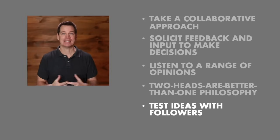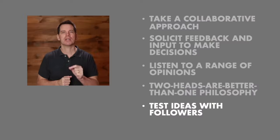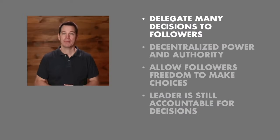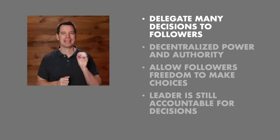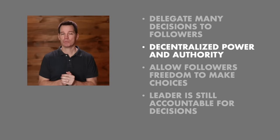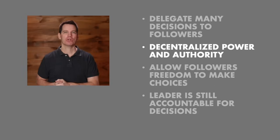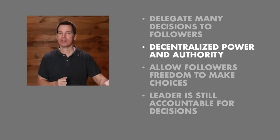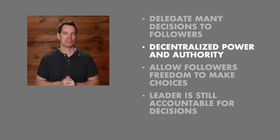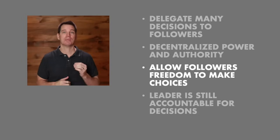They have what you call a two-heads-are-better-than-one philosophy. A leader might test ideas with followers and say, 'Hey, here's what I was thinking of doing — what do you think?' In cases like these, the leader may still make the ultimate decision. But at other times, democratic leaders may delegate power to followers, especially when those decisions directly influence the followers' jobs. This is called a decentralized approach to power and authority, which contrasts with the centralized approach of autocratic leaders.